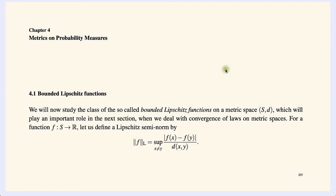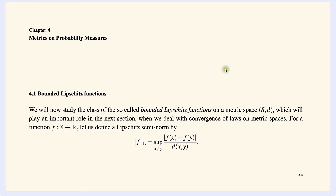In this video we will begin Chapter 4: Metrics on Probability Measures. We will continue studying convergence of probability measures, but now in the more general setting of general metric spaces, rather than the real line or Euclidean spaces as in the previous chapter. At the end of this video I want to go over a few basic observations, mostly from real analysis, which are scattered throughout this chapter but useful to keep in mind from the very beginning.